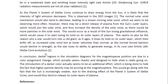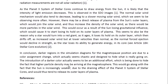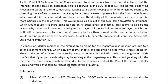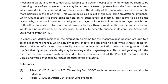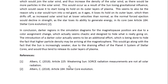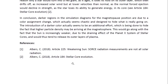You may look at Article 184 entitled 'Stellar Core Evolution' for more details. In conclusion, darker regions in the simulation diagrams for the magnetopause position are due to a color assignment change which actually seems chaotic and designed to hide what is really going on. The introduction of a darker color seems to be an additional effort to hide the fact that higher particle density may be arriving at the magnetosphere, which would go along with the Sun being increasingly weakened due to the draining effect of the Planet X system of stellar cores. This is Dr. Claudia Albers, Planet X physicist. Thank you for watching.